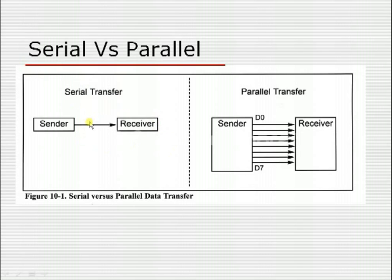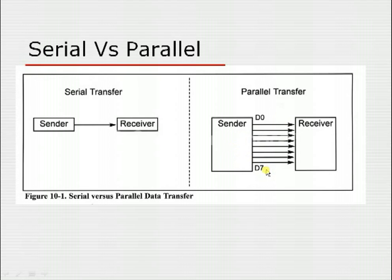The advantage of serial communication is that it is simpler and the cost for implementing it is very low. The drawback is that the speed of transmission is very low. In case of parallel communication, the advantage is high transmission speed, but the drawbacks are that the system is complex, the cost is very high, and there is a chance of noise degrading the message.